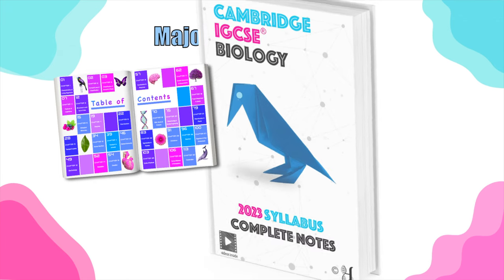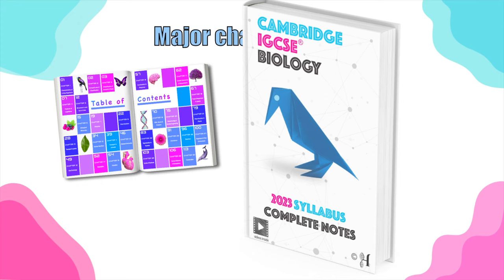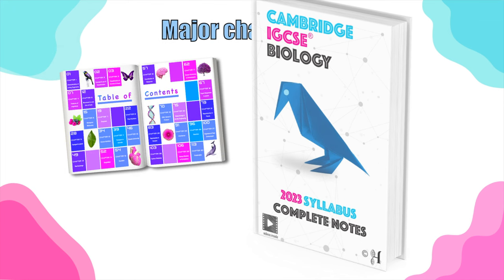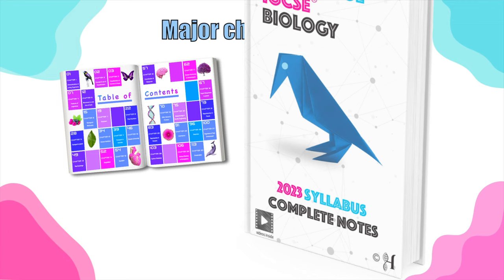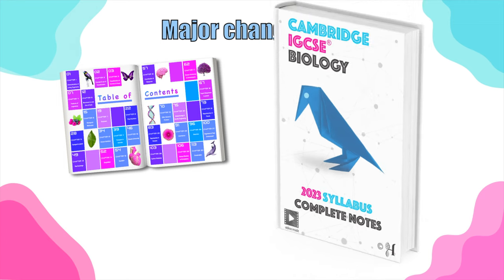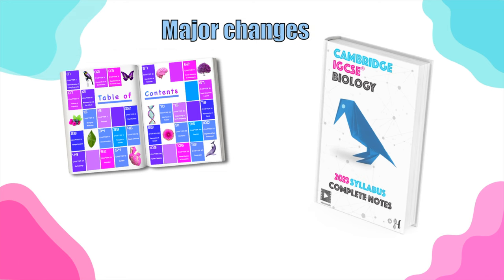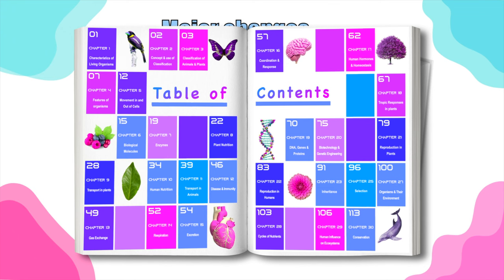Over the last year, I've been updating my IGCSE complete notes. This book has been around for almost 10 years now, and this has been the largest change. The book is now applicable for the 2023 syllabus — I have removed all of the things that are no longer included and added those small extra details from the 2023 syllabus. The main topics that have been largely changed are excretion, coordination and response, drugs, and to a lesser extent, human reproduction and ecology.